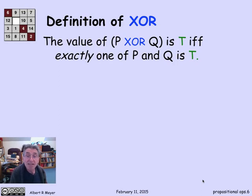For XOR, the P XOR Q is true if and only if exactly one of P and Q is true.